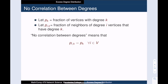So let's dig into the math behind this intuition. We're going to have to start by defining what no correlation between degrees means. We let p_k denote the fraction of vertices with degree k. This is just the degree distribution of the network.